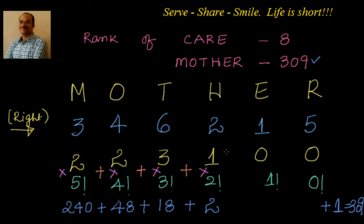So this is how you can find out the rank of a word using the shortcut method. Remember, this exact method works only when there is no repetition of letters. If the word is like 'India', 'success', or 'Mississippi' where letters repeat, we need to tweak the factorials to account for repetitions. The first part — counting how many letters come before — remains the same. We will cover that in the next session. Please let me know your feedback. Thanks for your time and support. Bye for now.